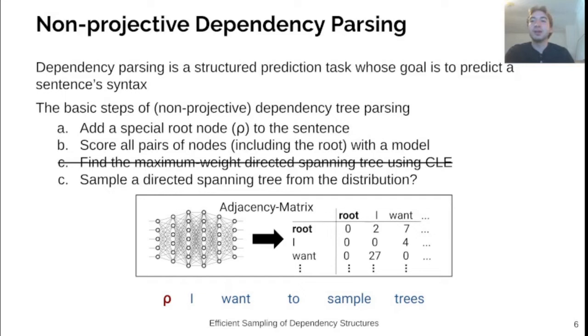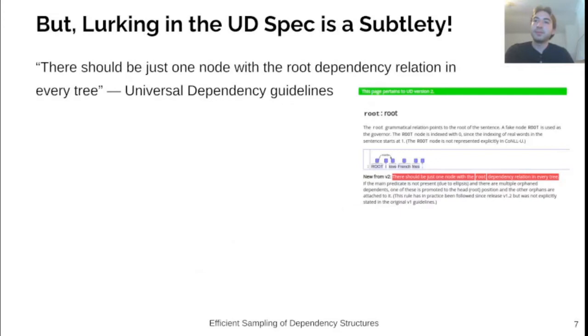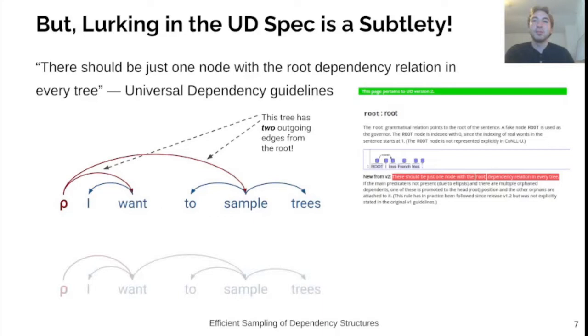In this talk, we will instead look at how we can sample a directed spanning tree from the distribution of the graph. One important subtlety to most dependency parsing annotation schemes is that a root constraint must be met. The Universal Dependency Guidelines state that there should be just one node with the root dependency relation in every tree. Therefore, a dependency tree like this one is not a valid dependency tree, and it has two outgoing edges from the root. Meanwhile, this tree has only one edge emanating from the root, and so is a valid dependency tree.